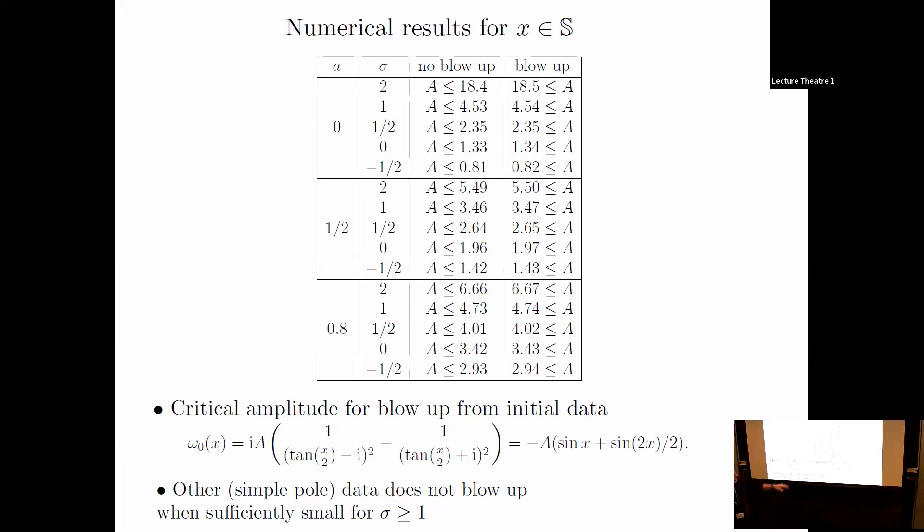But also, even when sigma is smaller than the theory requires, we see the same thing. The theory applies for sigma greater than or equal to one, but we see global existence even when sigma is smaller. That makes you ask: is there a critical sigma? Now, we've been able to find blowup for arbitrarily small data for some sigma outside the range of the theorem.